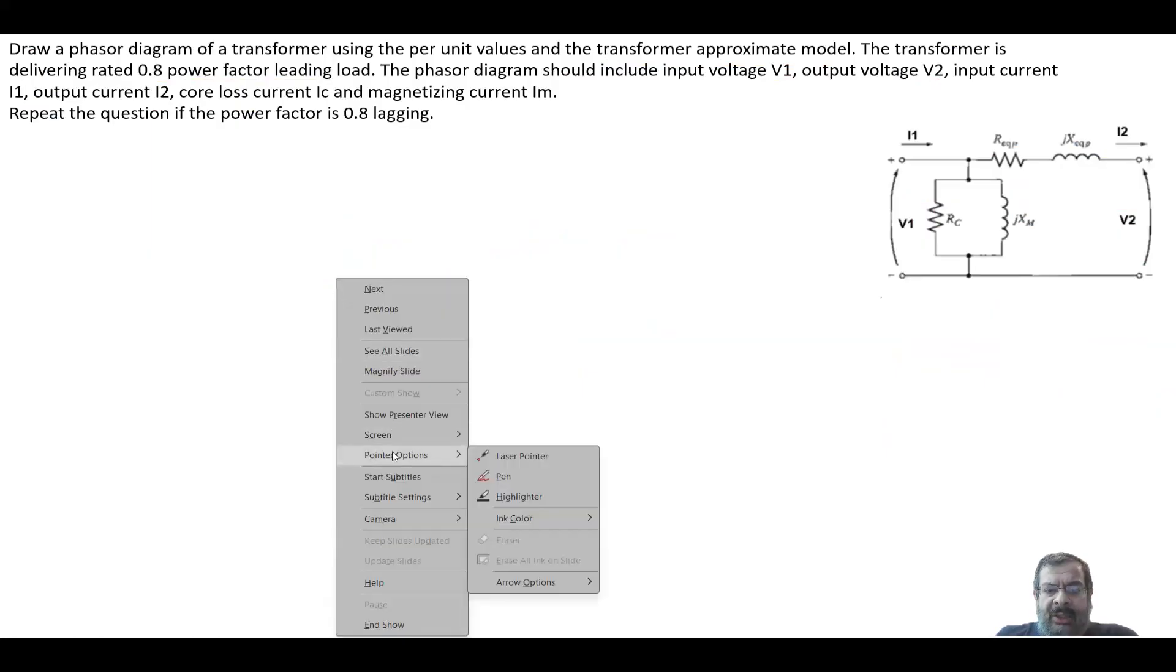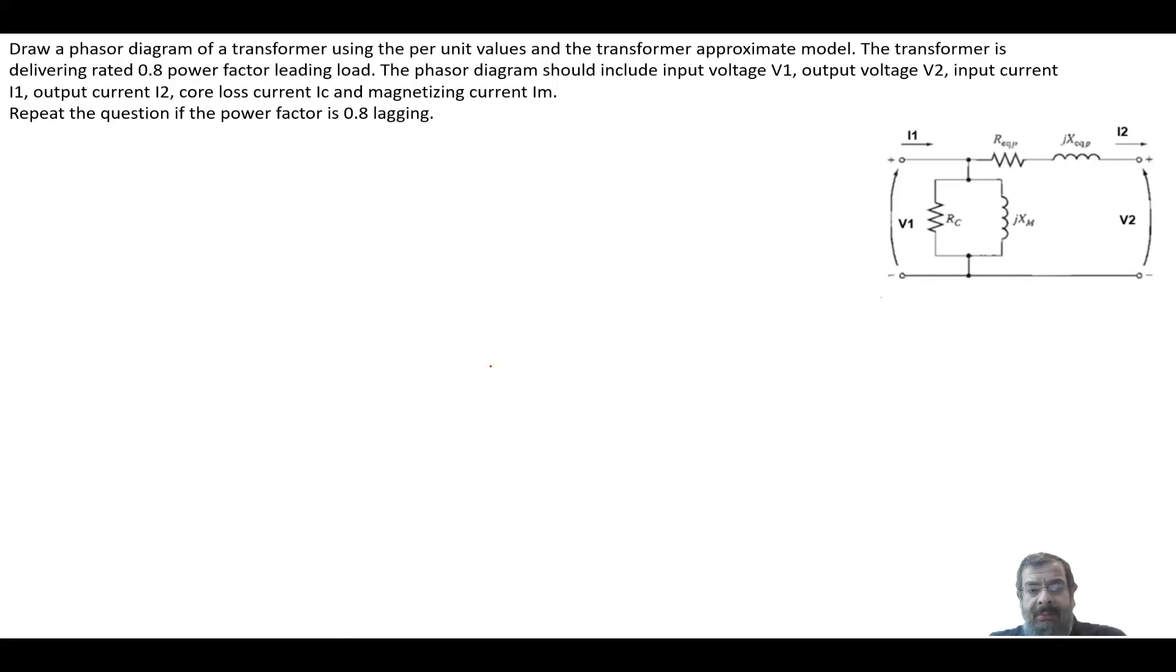Now, how will this change if I change the power factor to lagging? Nothing big will change. This is V2. Your I2 now will be lagging, so it will be like this at angle 36.9 degrees.